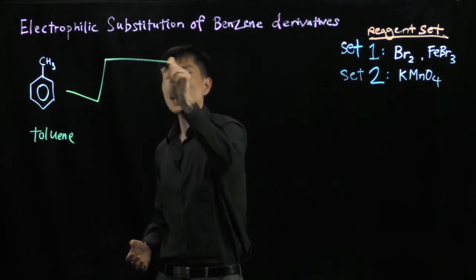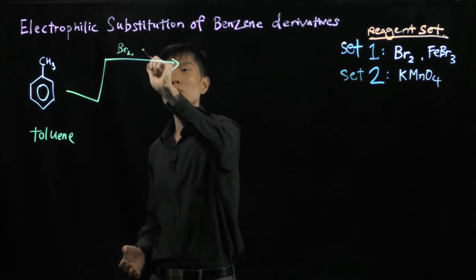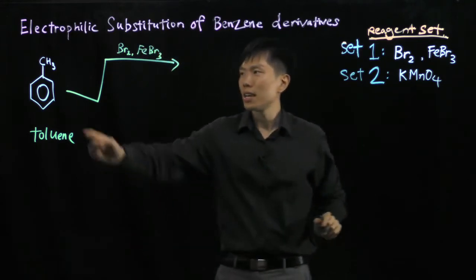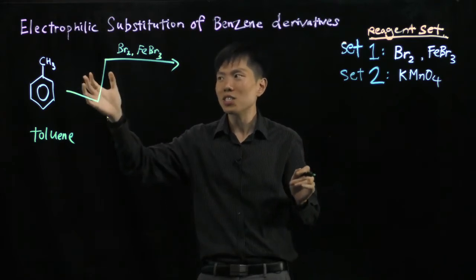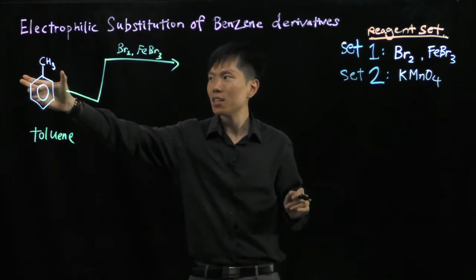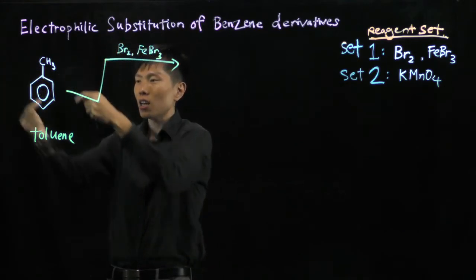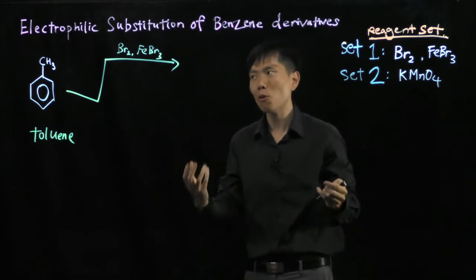Suppose we add Set 1 first. In step 1, we add Br2 with FeBr3. Alkyl groups are electron-releasing. Although they are just inductive and weak, they still activate the ring and direct the next electrophile to the second or fourth position—ortho-para directing.